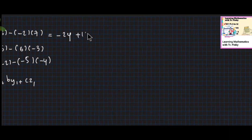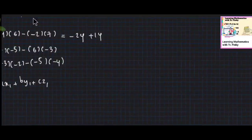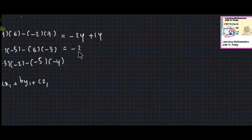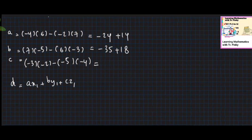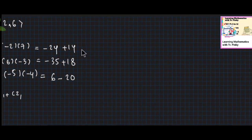B: N1 is 7, L2 is minus 5, N2 is 6, L1 is minus 3. C: L1 is minus 3, M2 is minus 2, L2 is minus 5, M1 is minus 4. These give us the normal vector.